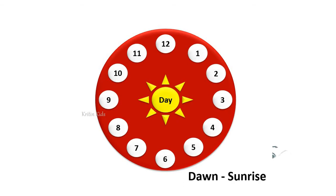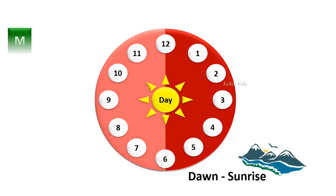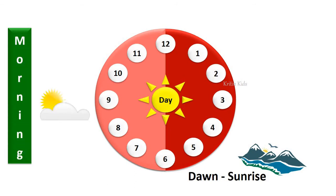Here we can see at 5 o'clock we have sunrise. It is the approximate time which we call it as dawn. From 6 o'clock to 12 o'clock, we call it as morning. And considering that 5 o'clock is the sunrise, so 1 hour before 5 o'clock, that is 4 o'clock a.m. to 7 o'clock a.m., it is called as early morning.